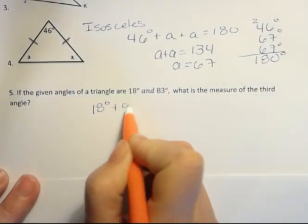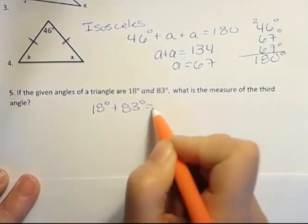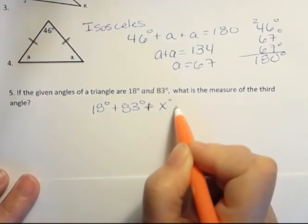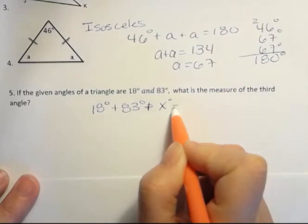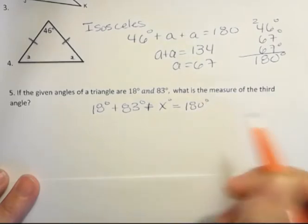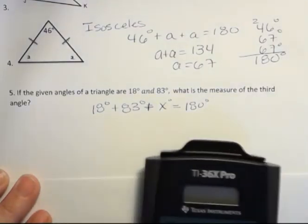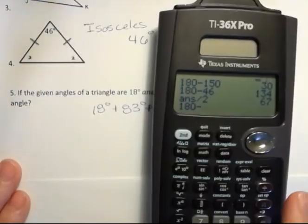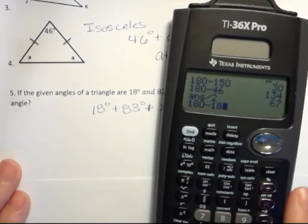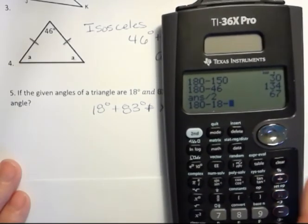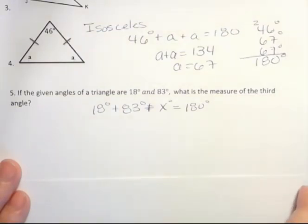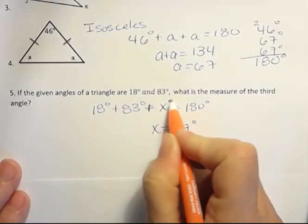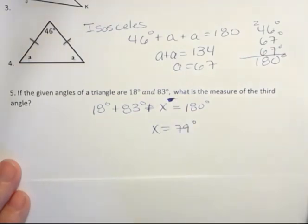We have 18 degrees plus 83 degrees, plus some unknown, let's call it x this time, something. And then we have 180 degrees. And so if I add, if I just do the other method where I just subtract 180 minus 18, minus 83, I'm left with 79 degrees. So x equals 79 degrees. Maybe I shouldn't have that there to begin with. Anyways, it's 79 degrees.